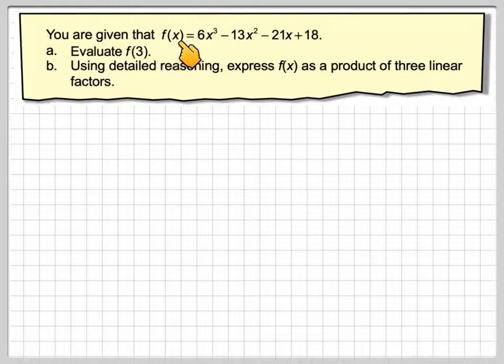You are given that f of x is equal to 6x cubed minus 13x squared minus 21x plus 18. Evaluate f of 3. Using detailed reasoning, express f of x as a product of three linear factors.